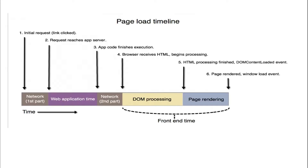This page explains what happens when we load a page — the entire process. Step one: initial request, link clicked — you've typed in a URL and pressed enter. Then the request over the network goes to the application server at the back end. When it reaches there, your request is processed and then some code will get run. Between this is the web application time.